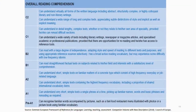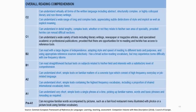The overall reading comprehension scale shows all levels available. For example, at B2 level, users can read with a large degree of independence, adapting style and speed of reading to different texts and purposes, using appropriate reference sources selectively, with a broad active reading vocabulary but experiencing some difficulty with low-frequency idioms. If teachers are planning a reading activity to gather information or an argument, they can refer to the specific skill stated in the companion volume.